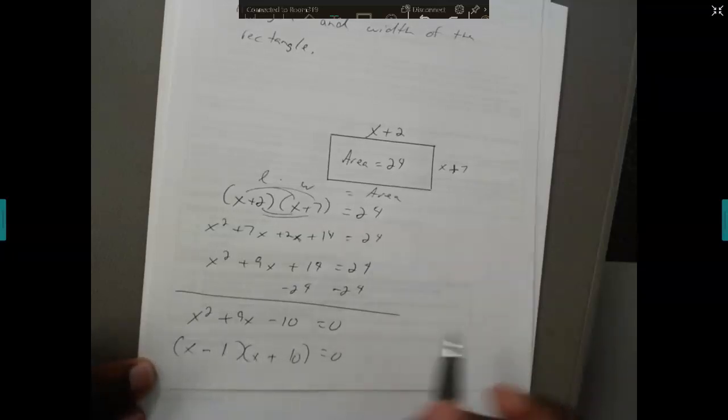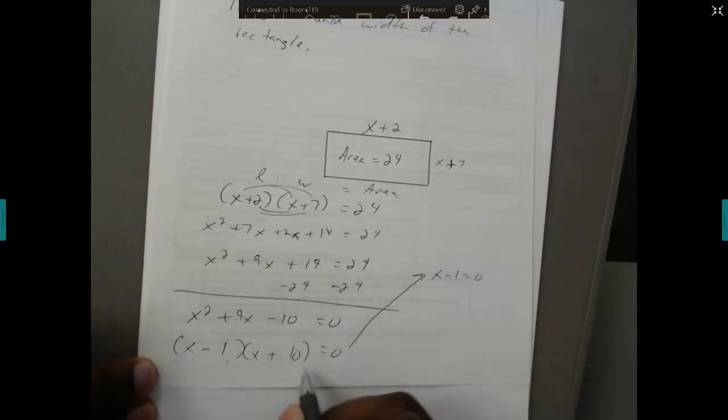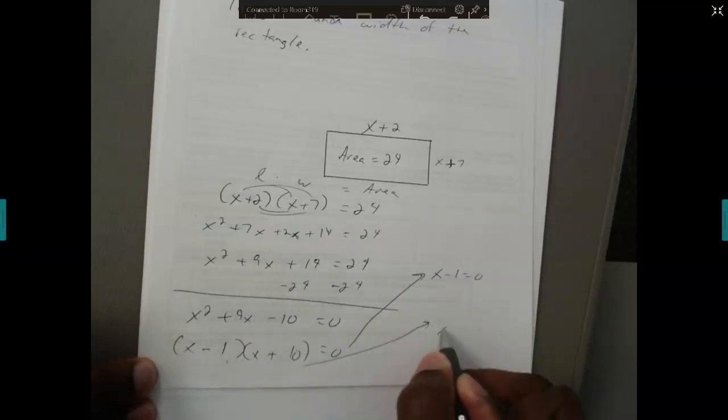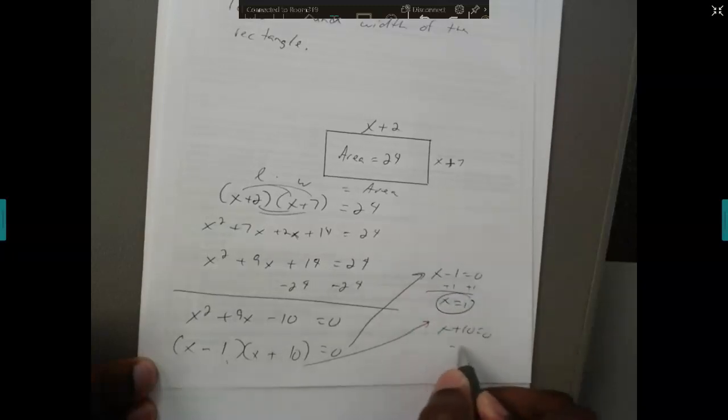To solve this equation, you set each of these factors equal to 0. So I would set x take away 1 equals 0, and I would set x plus 10 equals 0. So one answer is going to be 1, the other answer is going to be negative 10.